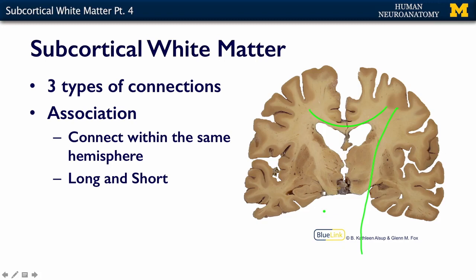Association fibers stay on one hemisphere, and they can be long or short. So they can go gyrus to gyrus, or they can go from the entire front of the brain all the way to the back of the brain.